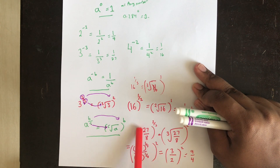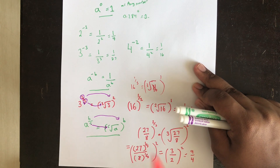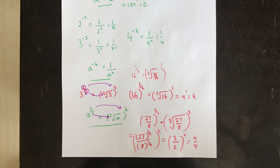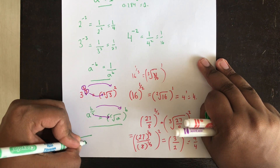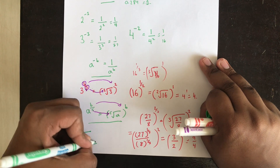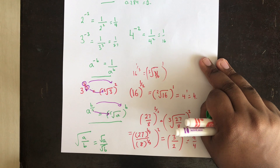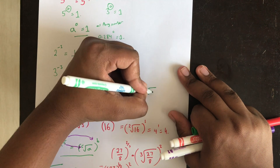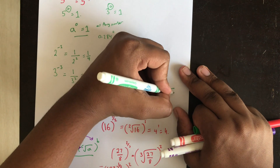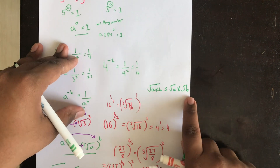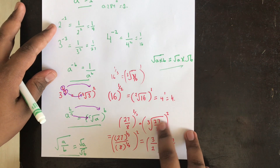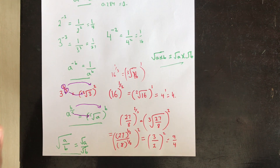So we cube-rooted the fraction 27 over 8 to get 3 over 2, then squared it to get 9 over 4. From this we can also derive that the square root of a over b equals square root of a over square root of b. Similarly, the square root of a times b equals square root of a times square root of b — square roots can be split up as long as you apply them to both parts.